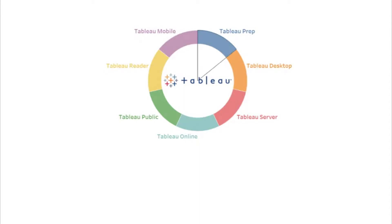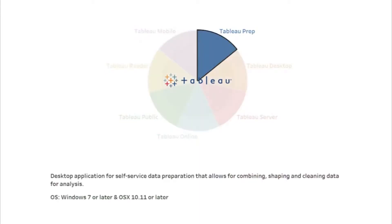The first product we'll be going over is Tableau Prep. Tableau Prep is the latest offering from Tableau and was officially launched in the year 2018. It is a desktop application meant for data preparation. Prior to its launch, when using Tableau, there would be a dependency on third-party ETL tools. With the launch of Tableau Prep, we can now combine data from different source systems, reshape it into the required format, and cleanse the data, thereby reducing the dependency on other third-party tools to an extent. Tableau Prep is available for the Windows and Mac operating systems.